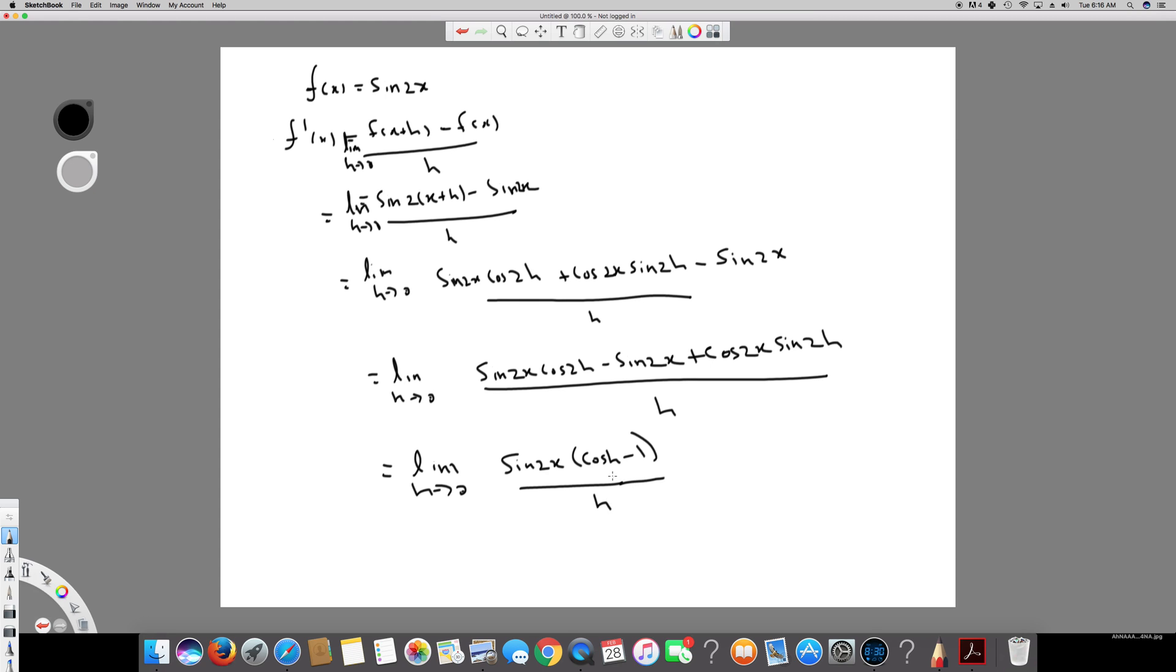And here we have, so I can separate it. So it's going to be cos 2h minus 1 over h. And plus, because both of them have common denominator h, I can separate it by adding h together. So this is going to be cos 2x sine 2h over h.